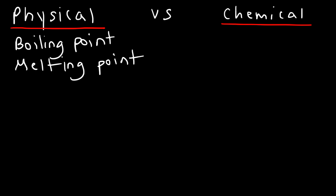Now, what about flammability? Is that a physical property, or is that a chemical property? Flammability has to do with a substance burning. If you burn paper, you are changing the chemical properties of paper. When you burn paper, the paper breaks down into carbon dioxide and water, and maybe some other stuff as well. So, the chemical identity has changed and you now have a new substance. Therefore, flammability is a chemical property, because it has to do with a change in substance, producing a new chemical substance.